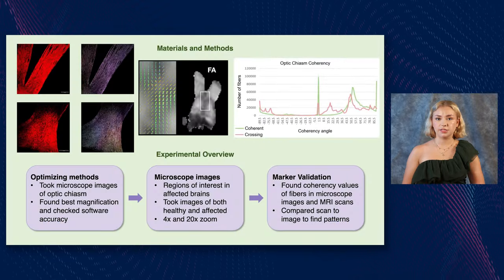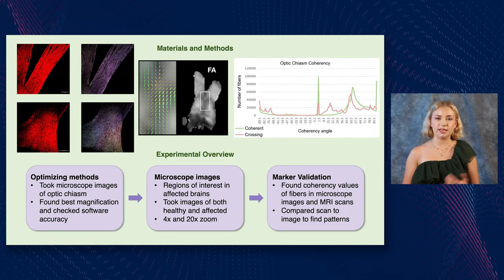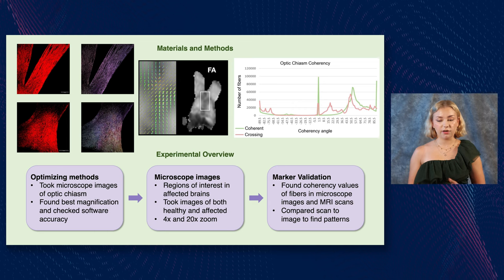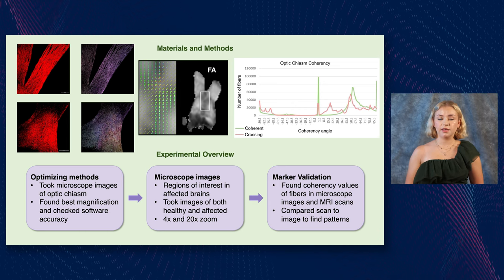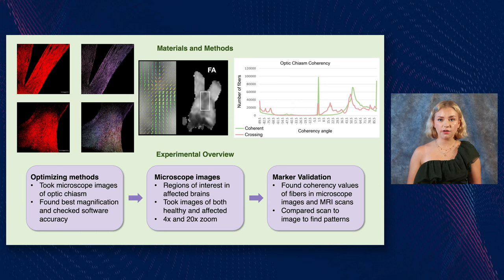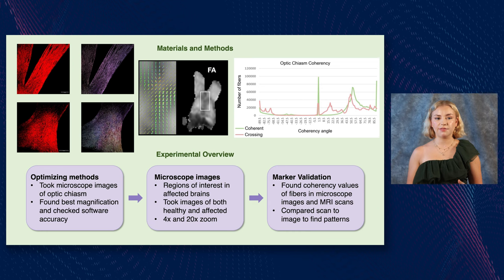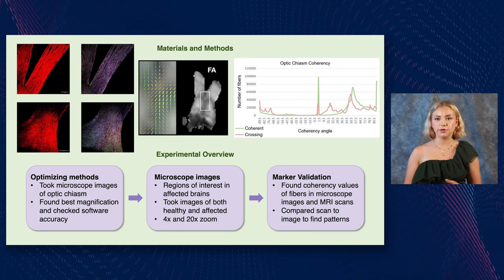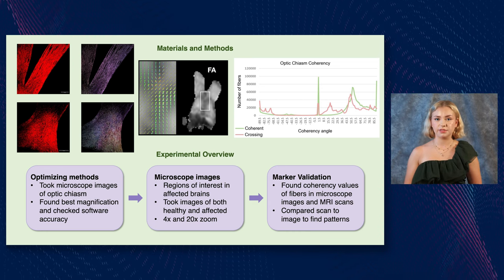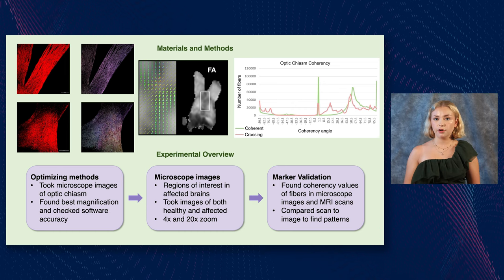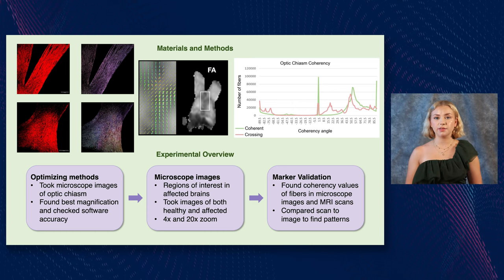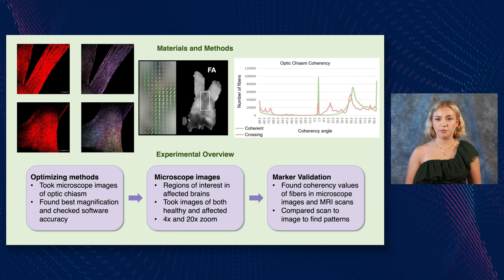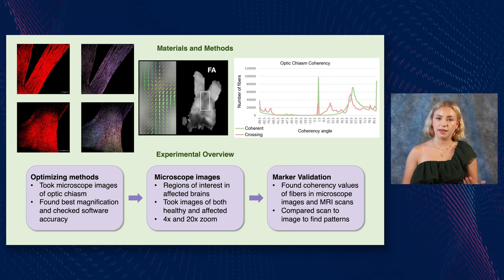The goal of my project was to validate abnormalities seen in MRI scans of Alzheimer's patients using microscopy. We chose this method because diffusion tensor imaging tractography — the type of MRI we used — shows the direction of water movement, and microscopy shows the orientation of fibers in the tissue. The direction of water movement depends on the alignment of the fibers, so correlations between them can validate the abnormalities seen in the MRI scans.